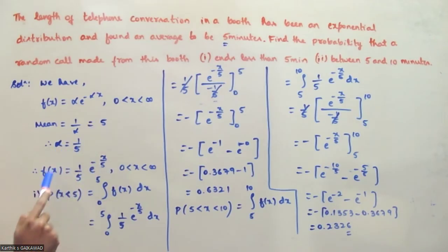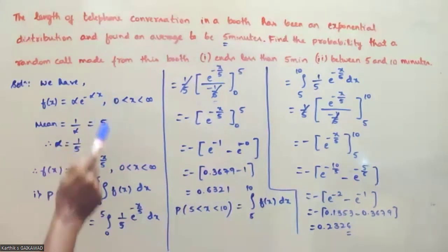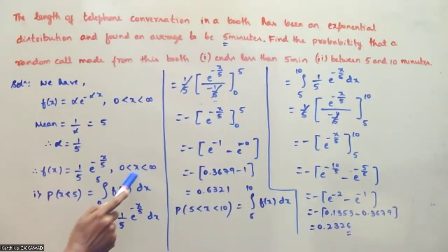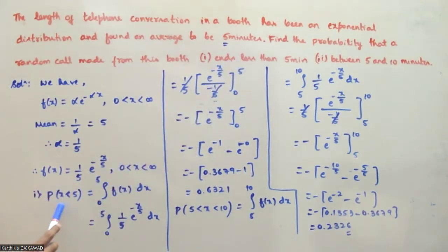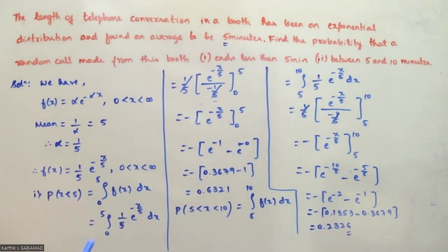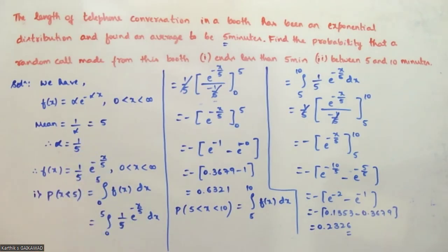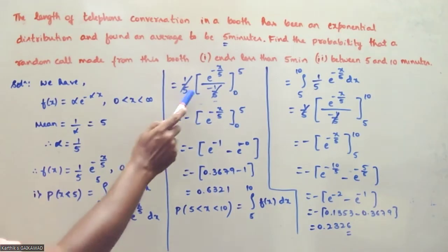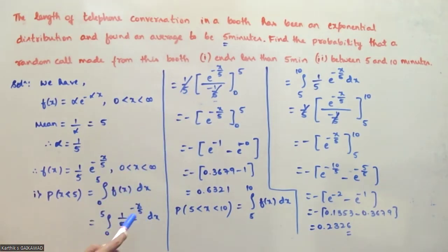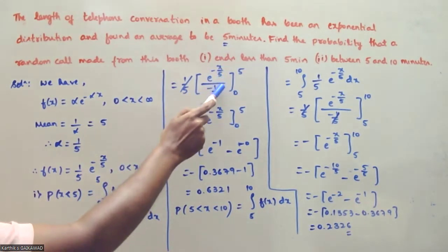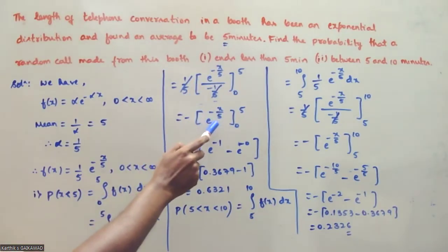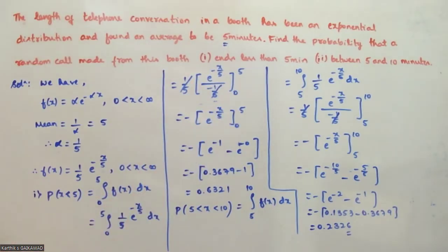To summarize: the mean is 1/alpha = 5, so alpha = 1/5. Therefore f(x) = (1/5) * e^(−x/5) for x between 0 to infinity. For the first question, P(X < 5) = integral from 0 to 5 of (1/5) * e^(−x/5) dx.